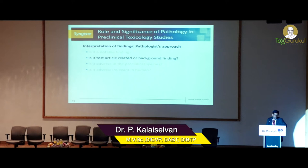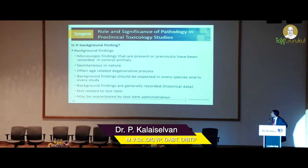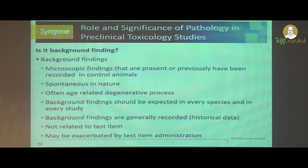The next question is whether the finding is test item-related or a background finding. Background findings are microscopic findings which are observed or recorded in control animals. These background findings are spontaneous in nature and are actually age-related degenerative findings. We can expect background findings in each and every study — there is no clean study and no truly normal animal.